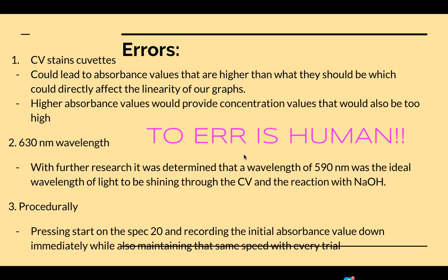A third error, procedurally, was the process of reacting the two reactants, and placing it in the spec 20, and shutting it, and recording that first initial absorbance value. And at the same time, being able to time it. All of that together was a bit complex, and there was a lot of confusion sometimes. As you can see, we ended up doing three trials because there was some error there as well. Just procedurally, having to keep that same speed, there's some room for error there in our consistency. That might have affected graphs, linearity, that could carry through to absorbance and our K value.